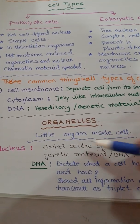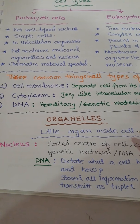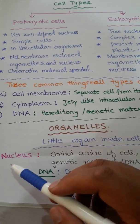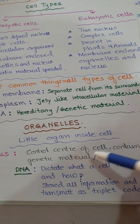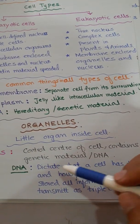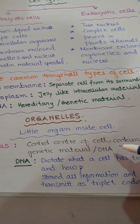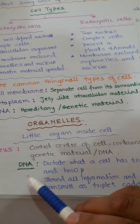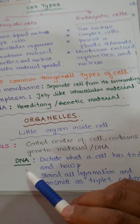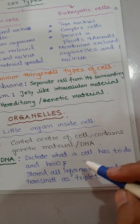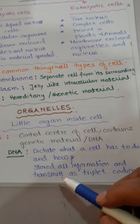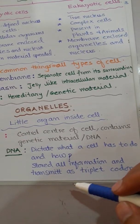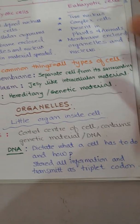Organelles are little organs inside the cell. The first organelle is the nucleus — it is the control center of the cell and contains genetic material like DNA. DNA consists of nucleotides, dictates what a cell has to do, stores all information, and transmits this information in the form of a triplet codon.